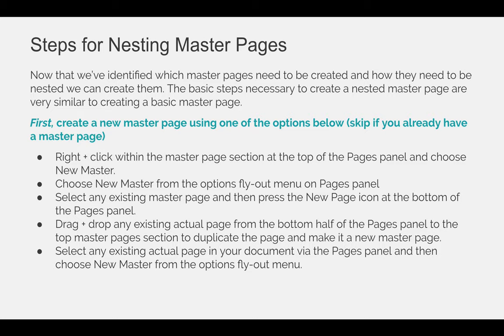The basic steps necessary to create a nested Master Page are very similar to creating a basic Master Page. The first step is to create the new Master Pages. So if we need three — Master A, B, and C — you need to create them. These are the same exact options provided earlier in the slideshow. So if you're comfortable creating a new Master Page, make three new Master Pages named Master A, B, and C, and then move on to the next slide.